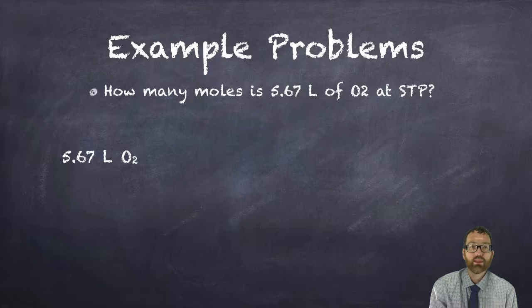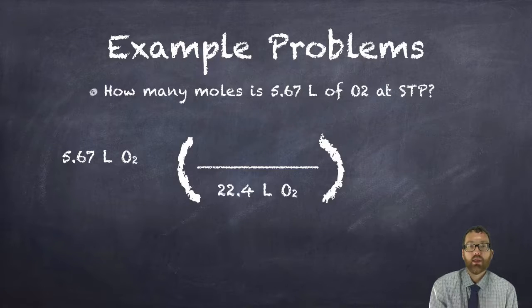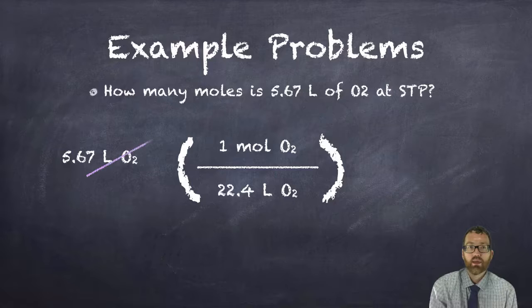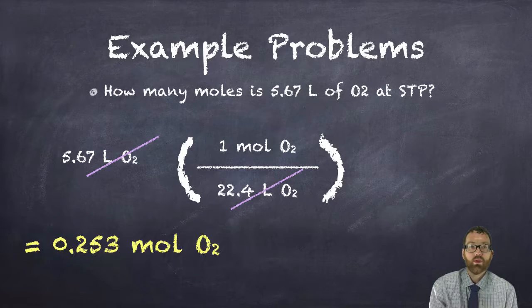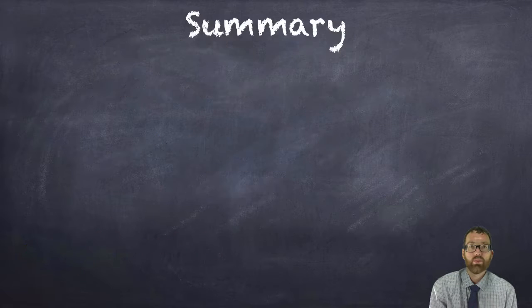So we'll start with the 5.67 liters of oxygen and set up our conversion factor. We want 22.4 liters on the bottom because I want liters and liters to cross off. And there's one mole of O2 gas in 22.4 liters of O2 gas. So liters will cancel. And in my calculator, I type 5.67 divided by 22.4, and that will come out to be 0.253 moles of O2 gas.